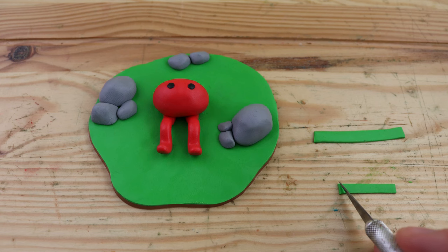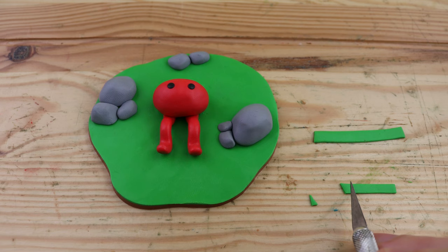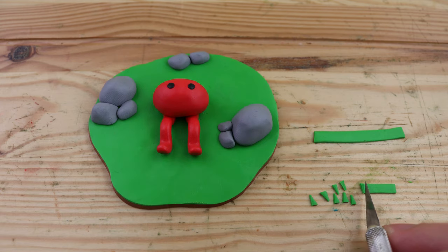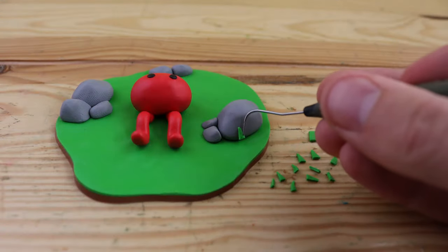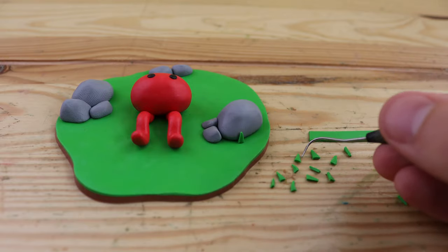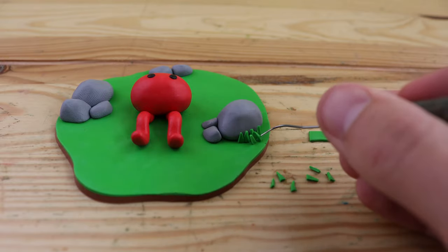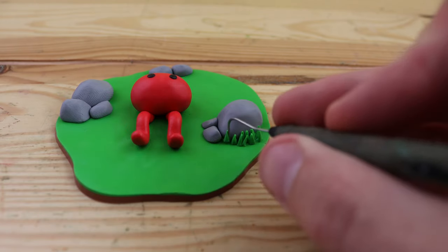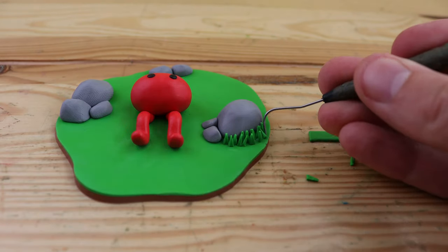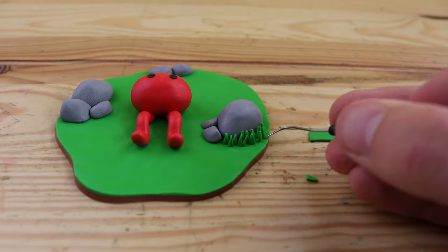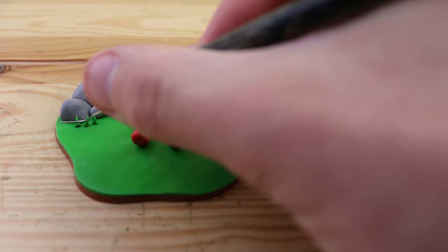And the base looks pretty empty and boring so let's add in some blades of grass. I've cut out a bunch of these little triangles and we can start placing them around the rocks. It can be a little bit tricky to get these to stay and after baking they can be very fragile. If you bump them some will break off but for the most part I don't really pick up my figure so I think it will be fine.